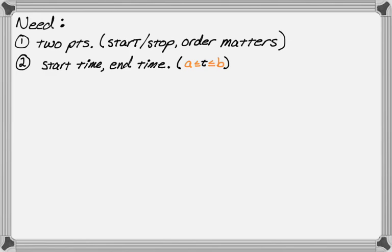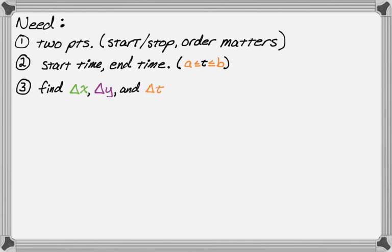Once we know these things, we can start to calculate our deltas. There are three deltas we need to calculate: delta x, which is our change in x; delta y; and also delta t. We're going to use those three deltas to calculate the rates of change for x and y.